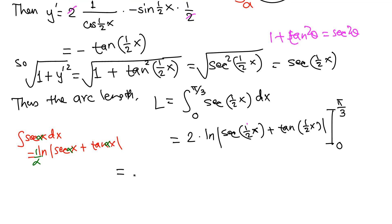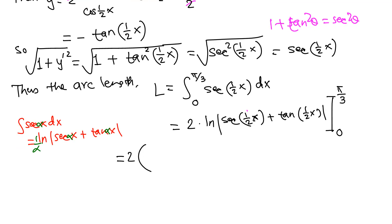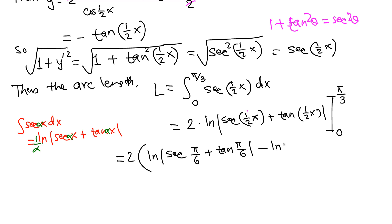The 2 is outside. Replacing x with π/3: we get ln|sec(π/6) + tan(π/6)|. Then replacing x with 0: minus ln|sec(0) + tan(0)|.